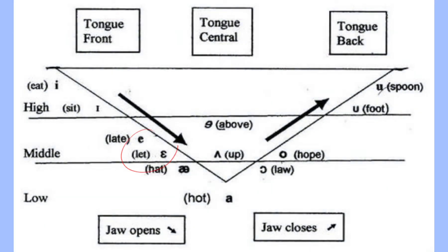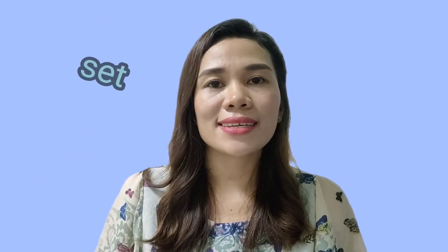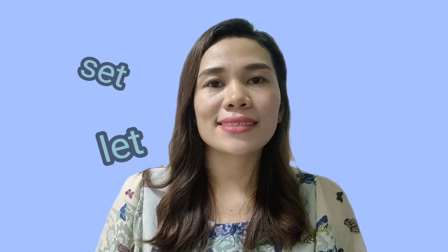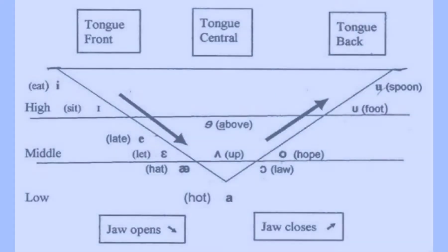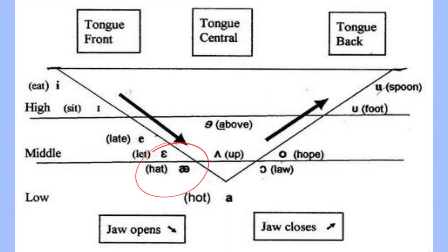Next is the sound of æ. This sound is made with your lips in a slight grimace and your mouth is open wider than A. Examples: set, let, met.